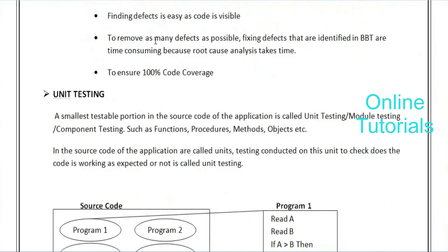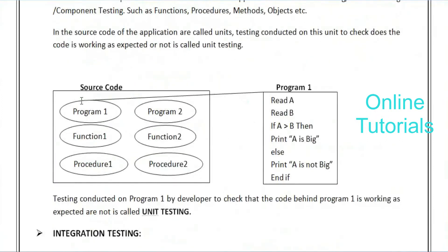Unit testing means testing a small component — a small functionality that you are implementing. It's a small program. In source code, you have many programs, many functions, and many procedures; the combination of all those is the source code, i.e., the executable file. In the source code we have a number of programs, and testing program one individually as an example — that is unit testing.